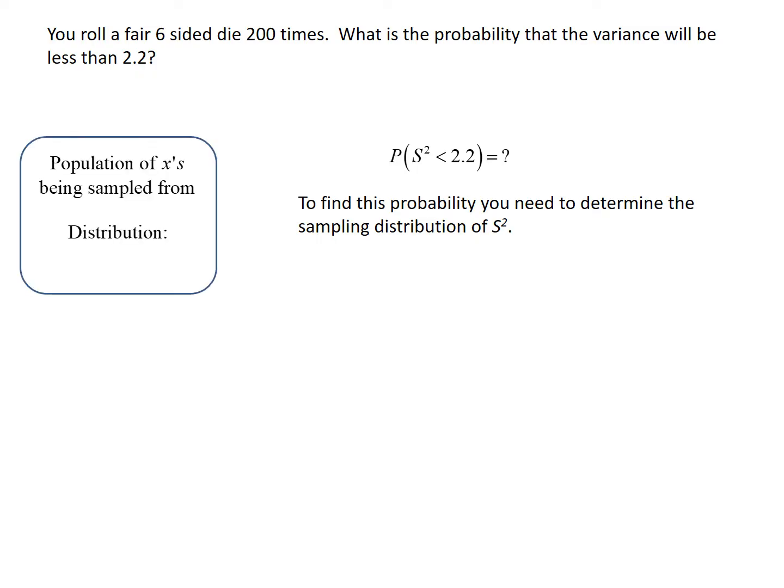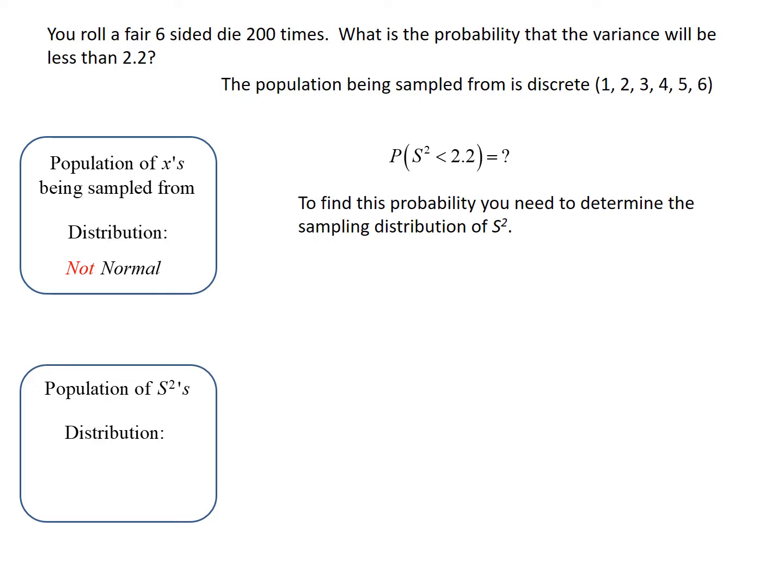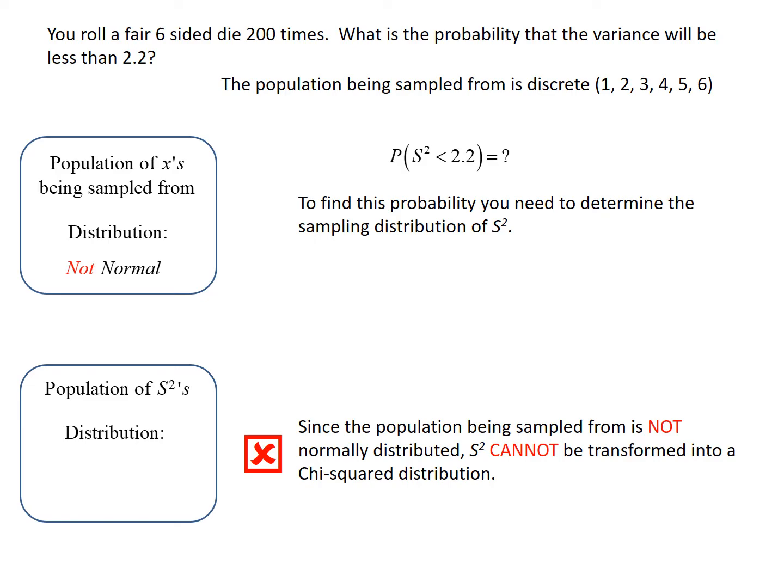We have to look at the population being sampled from. When we roll the die, we get a number 1, 2, 3, 4, 5, or 6. That's a discrete population. Discrete populations are not continuous by definition, and normal distributions are first and foremost continuous with additional conditions. So the population we're sampling from here is absolutely not a normal distribution. Therefore, the sample variance cannot be turned into a chi-squared distribution because the population being sampled from is not normal.